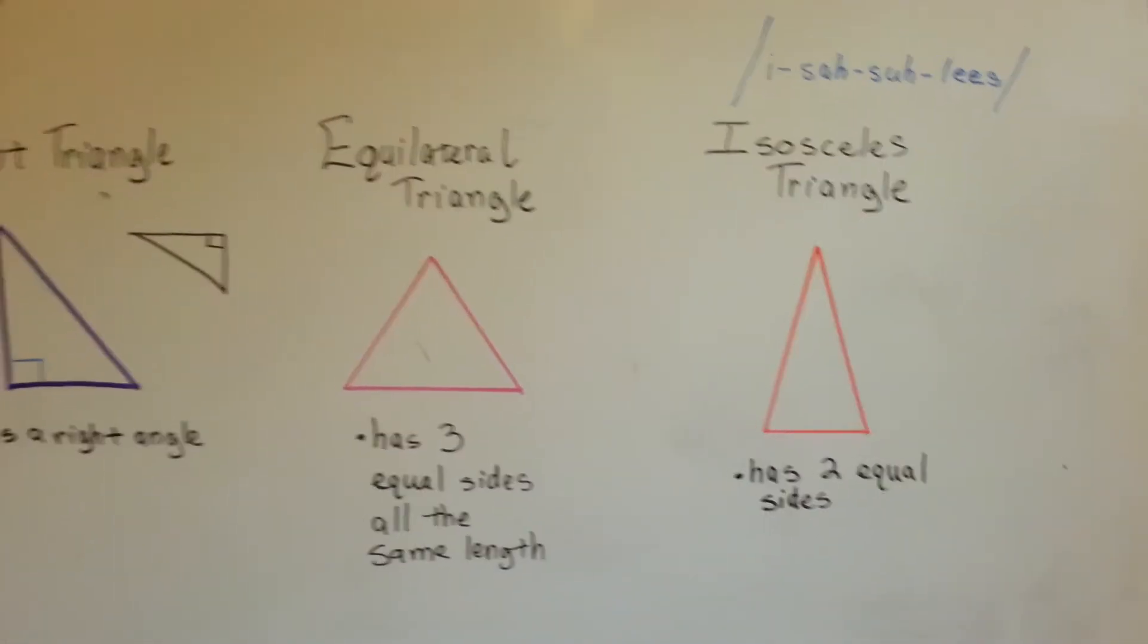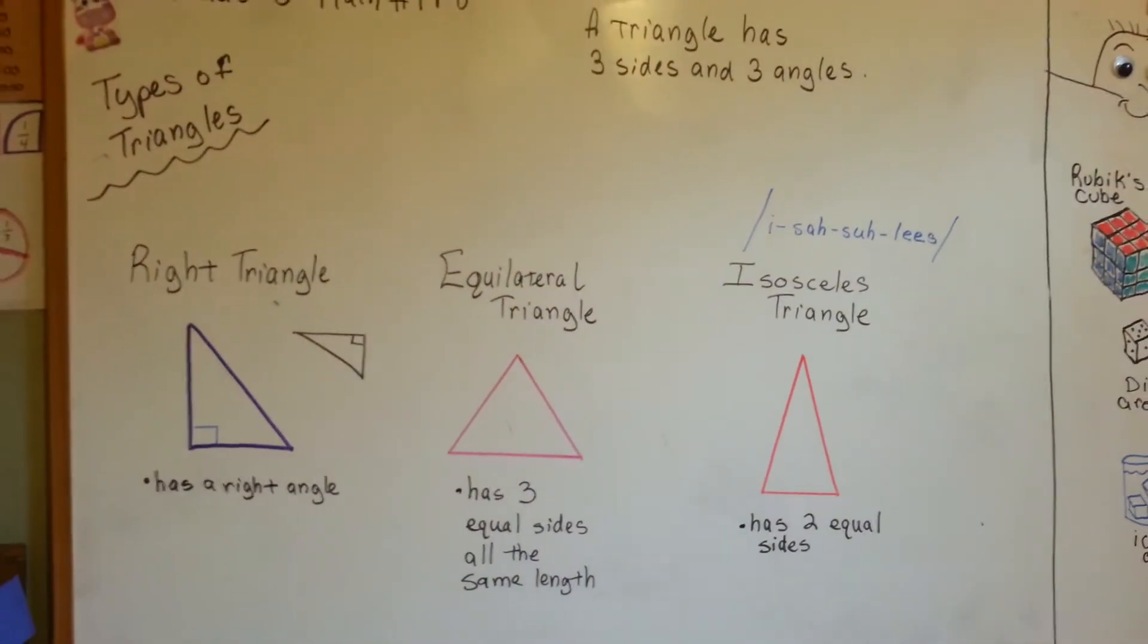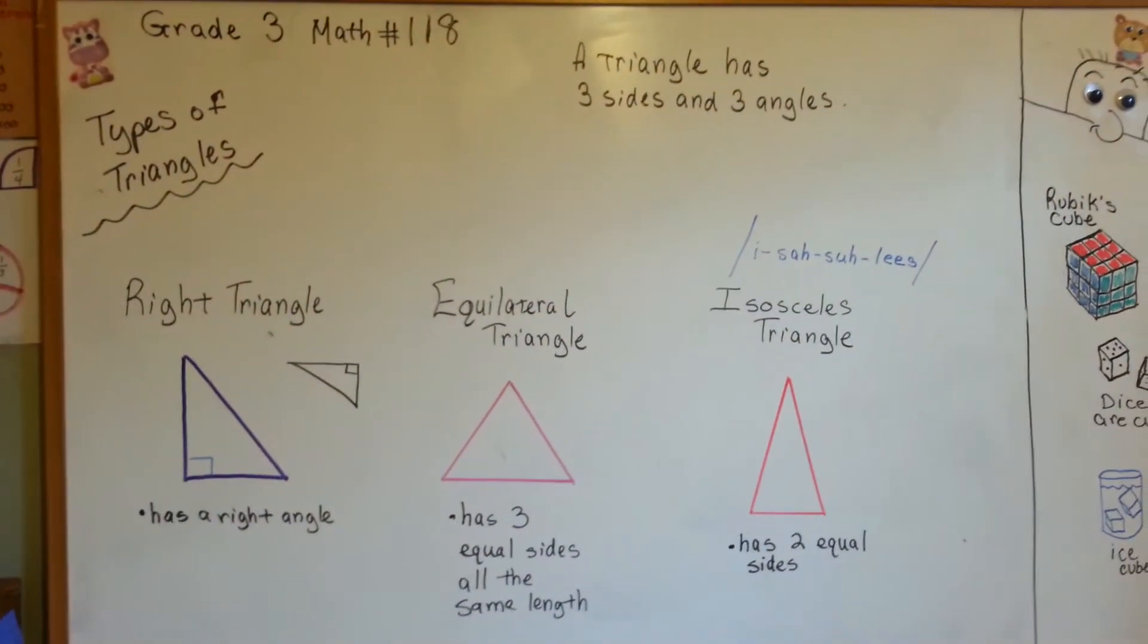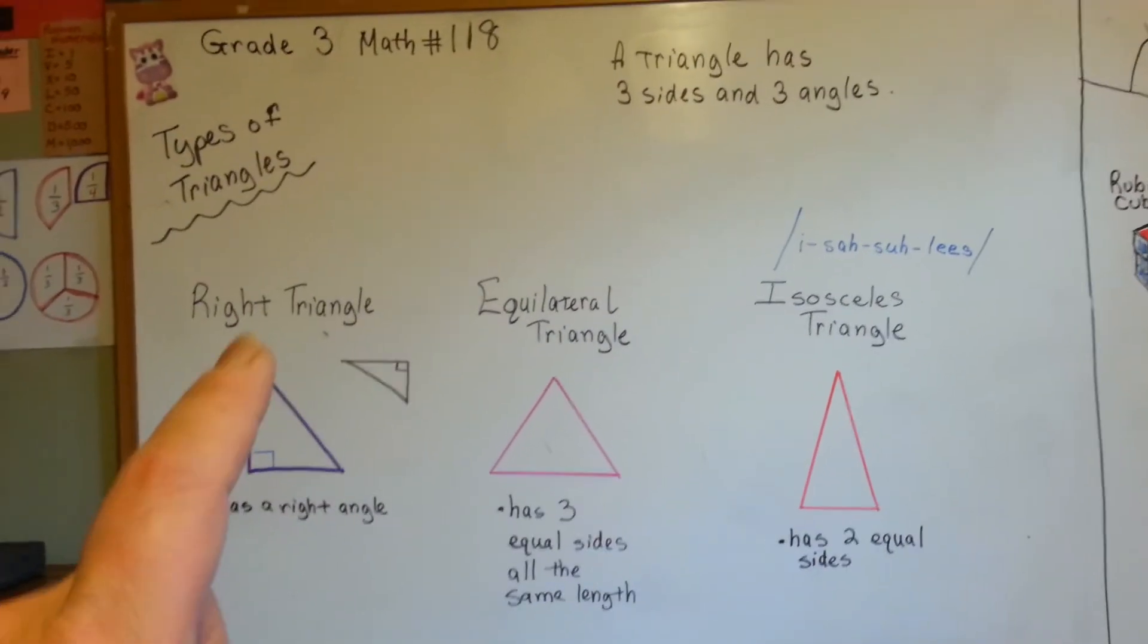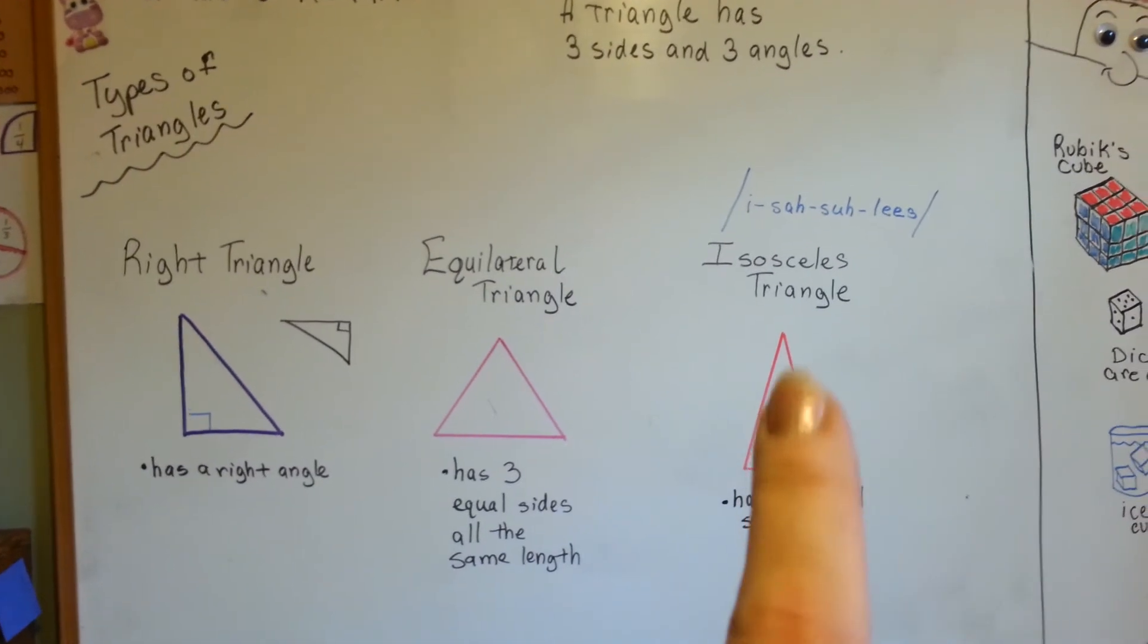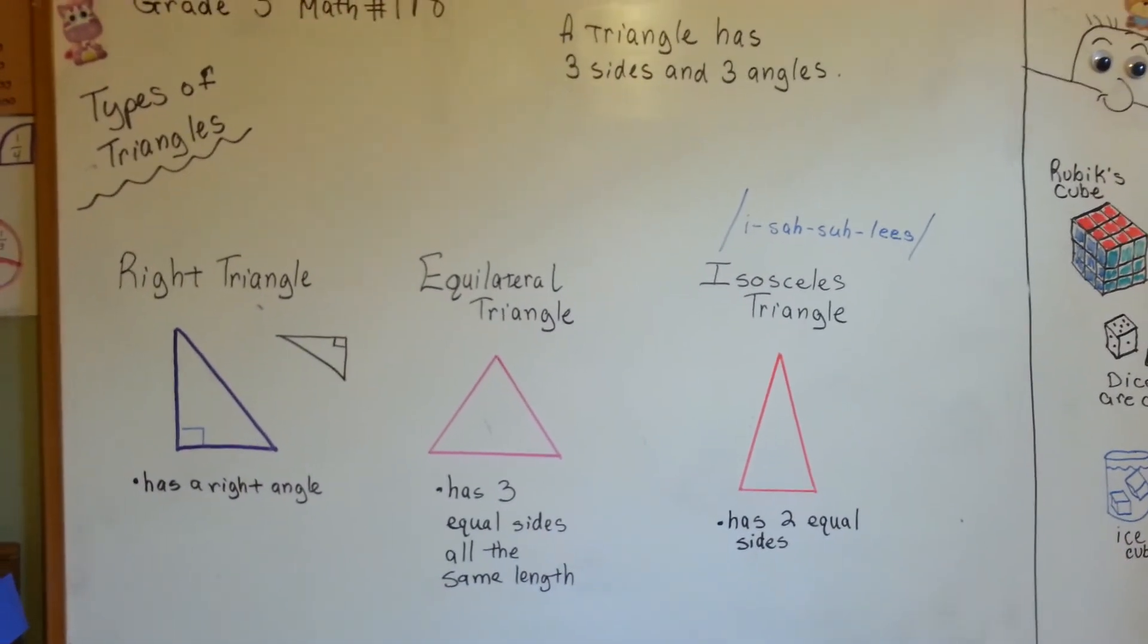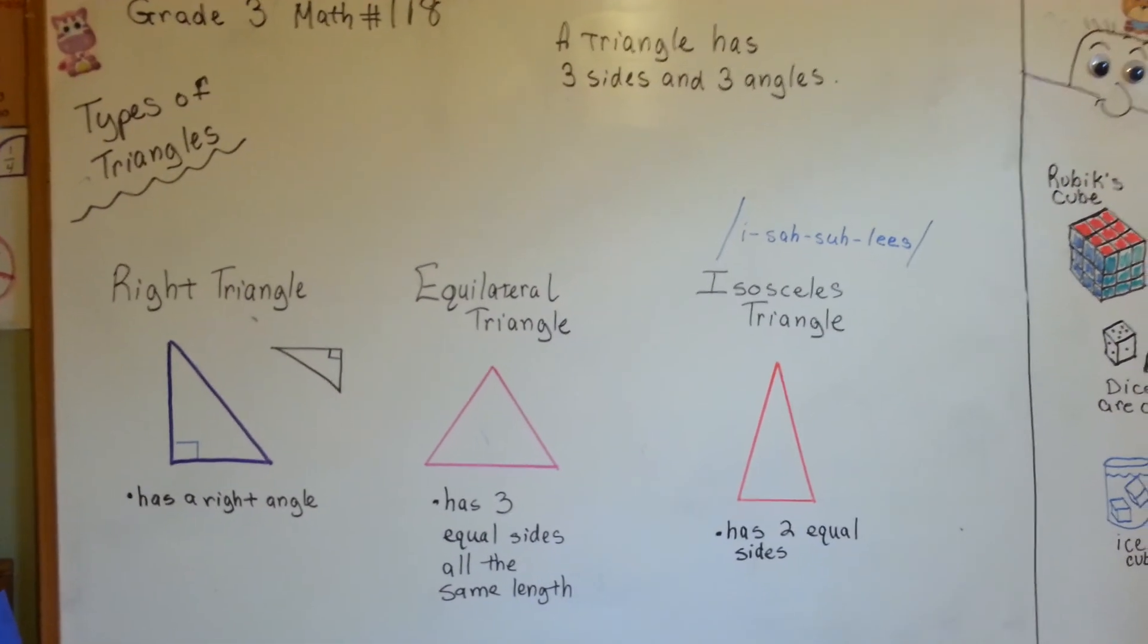So those are our three triangles. There's more we could talk about them, but we'll get into that in 4th and 5th grade math. For right now, it's important for you to just know that there's a right triangle, an equilateral triangle, and an isosceles triangle. I'll see you next video. Bye.